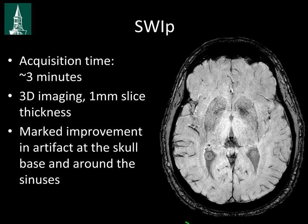Initially when SWI hit the big time, we had a lot of trouble with susceptibility artifact around the skull base — over the petrous ridges or near the frontal sinuses, anywhere dense bone or air was close to the brain. But the SWIP sequence now available has made a lot of progress in that area. Here's a nice example: this used to be an area frontally with a lot of artifact obscuring the frontal lobes, but with this newer technique there is very little artifact even though the frontal sinuses are underlying that region closely.